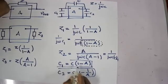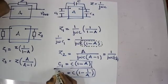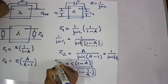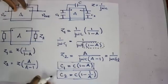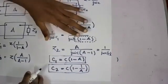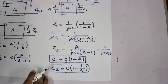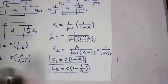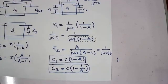Now we can apply these things to transistor amplifiers. Whenever you have any components across the amplifier, you can use this theorem to divide the capacitors or resistors across the input and output side of a feedback network.